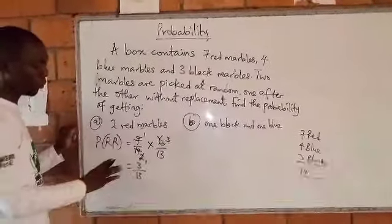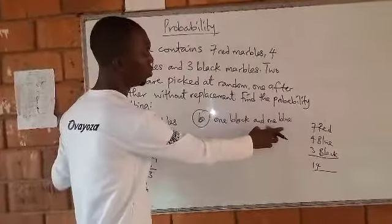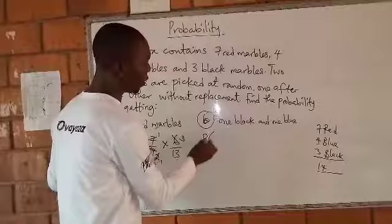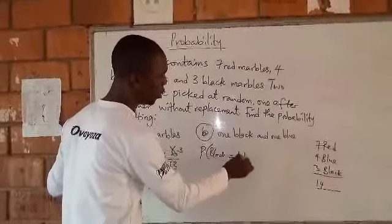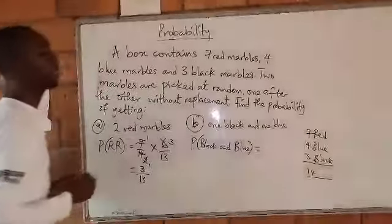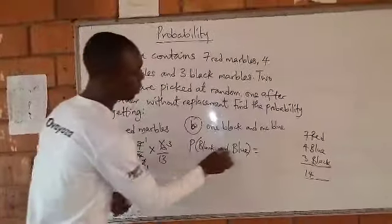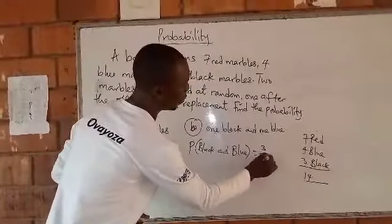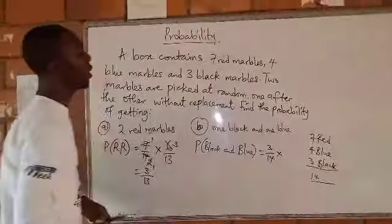One black and one blue. Probability of getting a black and a blue. How many blacks are there? Three. So probability of getting a black is 3 over 14 times blue. We have how many blues?